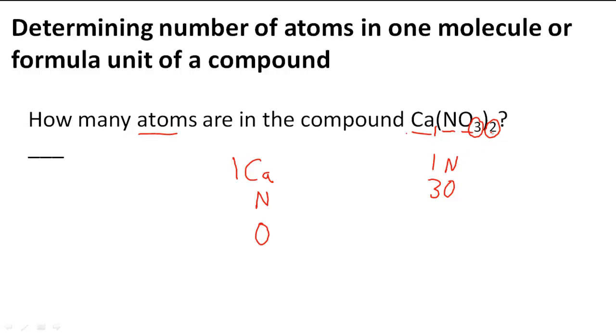But what does this little 2 mean in Ca(NO3)2? When you have (NO3)2 what this means is that this whole molecule NO3 is in the compound Ca(NO3)2 twice. So it just means that NO3 is going to be there twice.